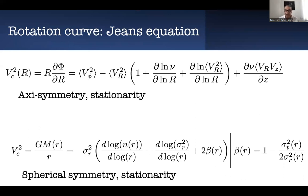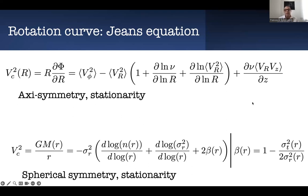How do we measure the rotation curve? In general, we assume that the system is stationary and axisymmetric. In this way, we can use the Jeans equation, which connects the gravitational potential to the various components of the velocity and its moments — in particular the transversal velocity v-phi, the radial velocity, and the density. In the external part of the galaxy, beyond the disk, we assume spherical symmetry and stationarity.